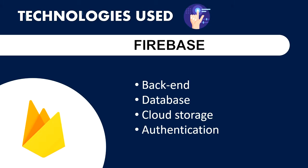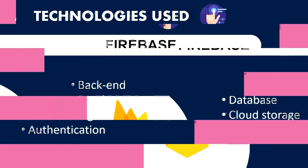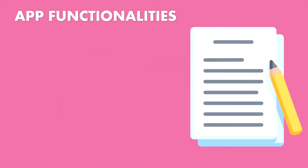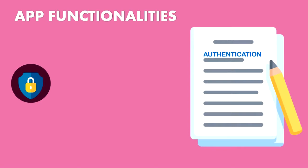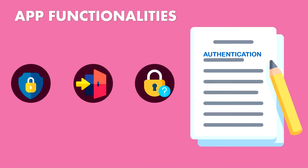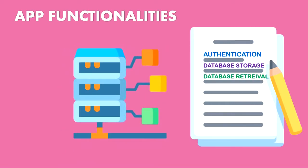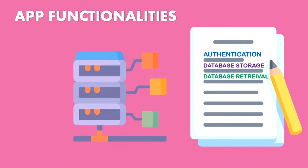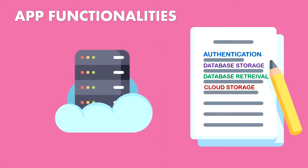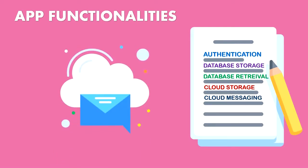Now let us see what our app can do. The functionalities of our application include: Authentication — you can secure your data by creating an account, log in safely, and reset the password if you forget it. These functionalities are provided by Firebase. The database stores student data and retrieves it securely. We also have cloud storage to store files. Finally, a chat feature enables cloud messaging across users via their unique mail ID.